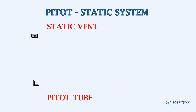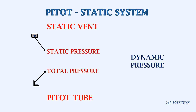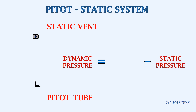The air that enters the pitot tube gives the total pressure. The air which enters the static vent gives the static pressure. From these pressures, we need to calculate the dynamic pressure. The dynamic pressure can be calculated by subtracting static pressure from the total pressure.